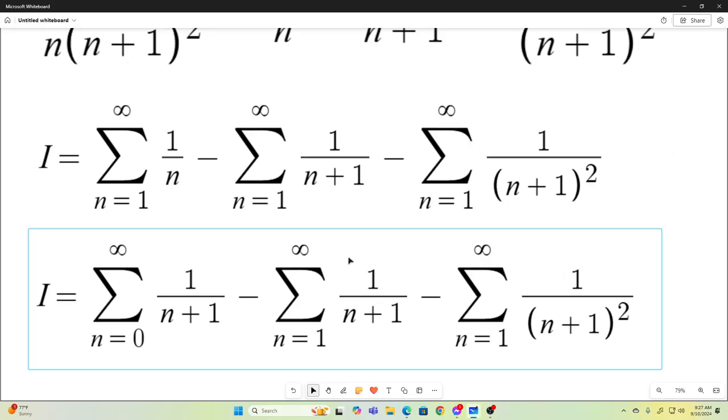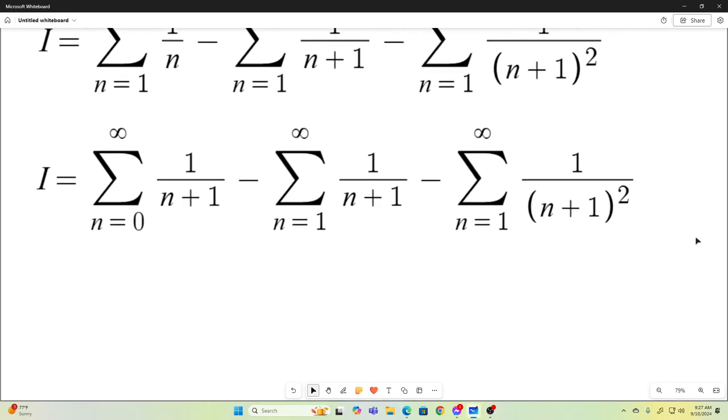They don't cancel out yet. We have to do one more thing. We have to get this index back to 1. And what we'll do to accomplish that is we will just subtract the n is equal to 0 term and instead start it at 1. The n is equal to 0 term is just 1. So, we're going to be taking 1 away and then adding 1 back to it.